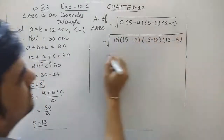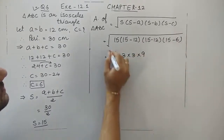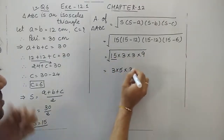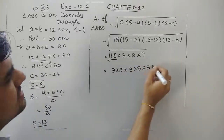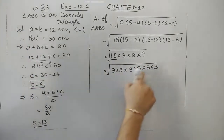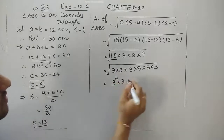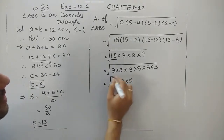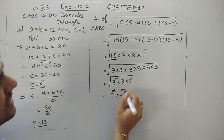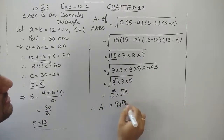Now simplify: 15 times 3 times 3 times 9. Finding prime factors: 15 is 3 times 5; 3 and 3 are prime; 9 is 3 times 3. We have 3 appearing 5 times total. Since 5 is odd, we split it into 4 times and 1 time. The even power gives 3 squared which is 9, and the remaining 3 and 5 stay under the root. So the area is 9√15 cm².